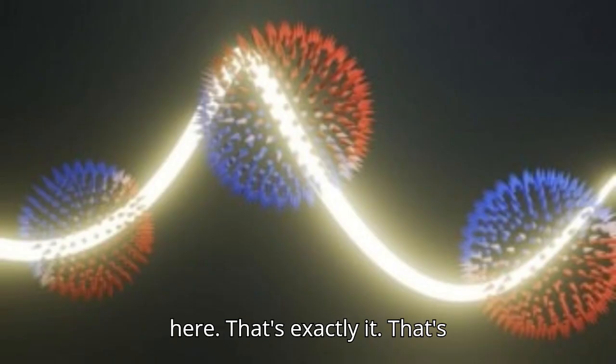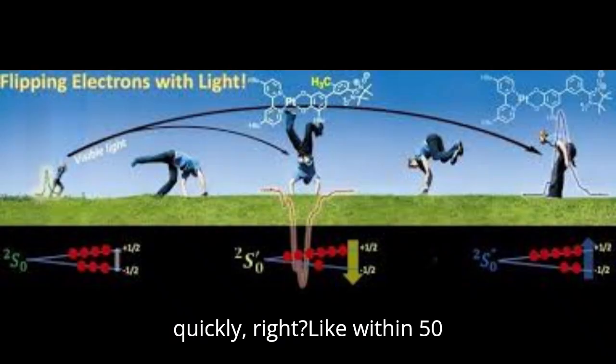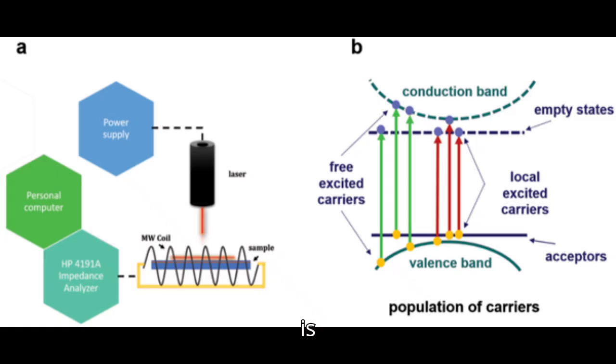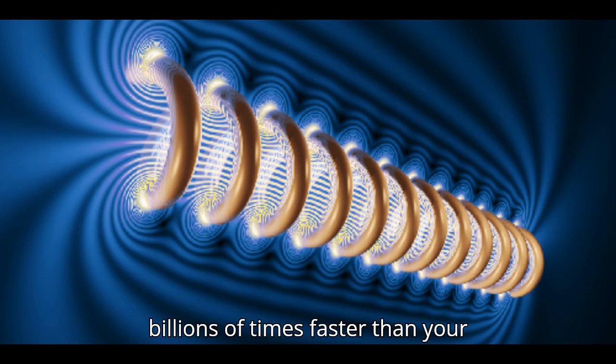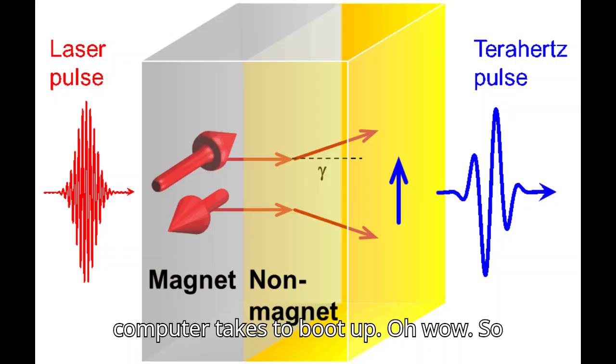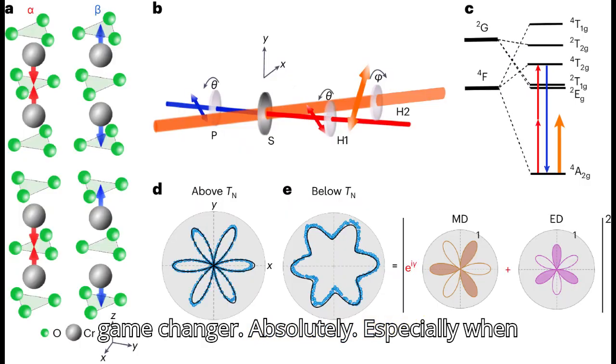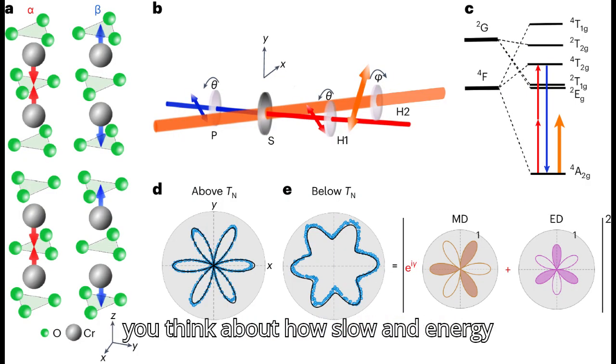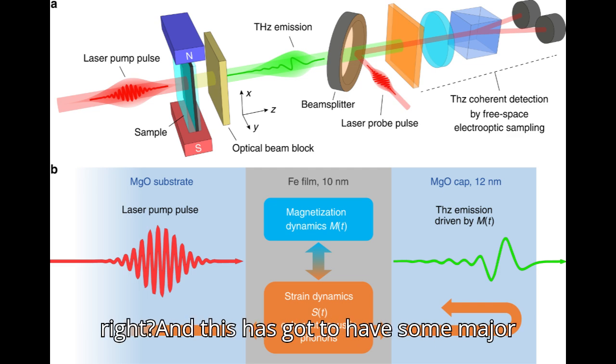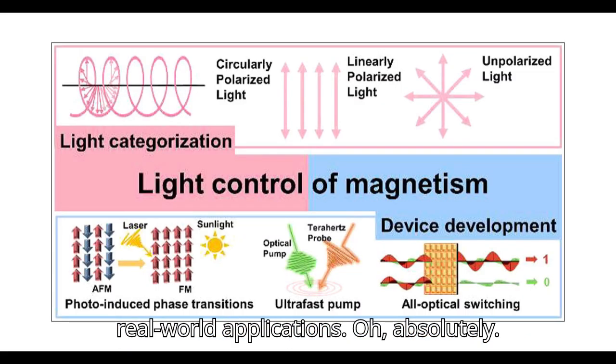So we're talking about controlling magnetism at the atomic level here. And this happens incredibly quickly - within 50 picoseconds. That's 0.00000000005 seconds. It's billions of times faster than your computer takes to boot up. And this speed is a game changer, especially when you think about how slow and energy intensive our current electronics can be.